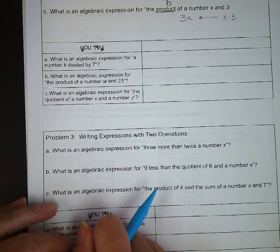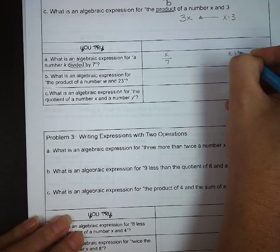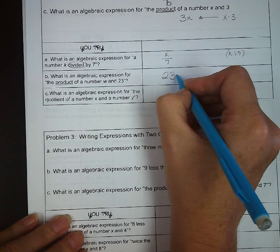So what is an algebraic expression for a number k divided by 7? So we have k, fraction bar, 7. What is an algebraic expression for the product of a number w and 23? Product, again, we're doing multiplication, so it's 23w.